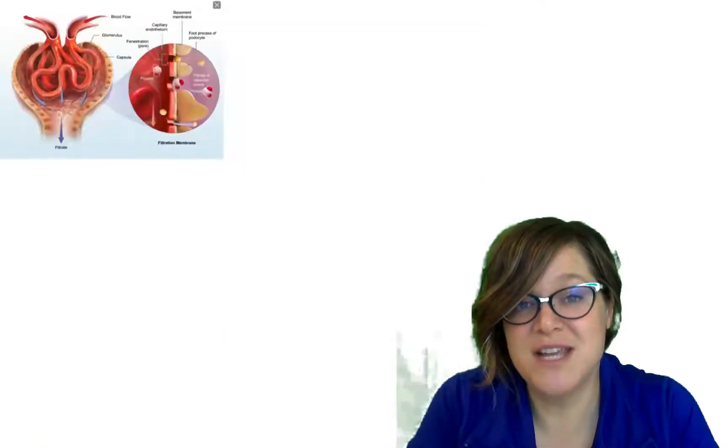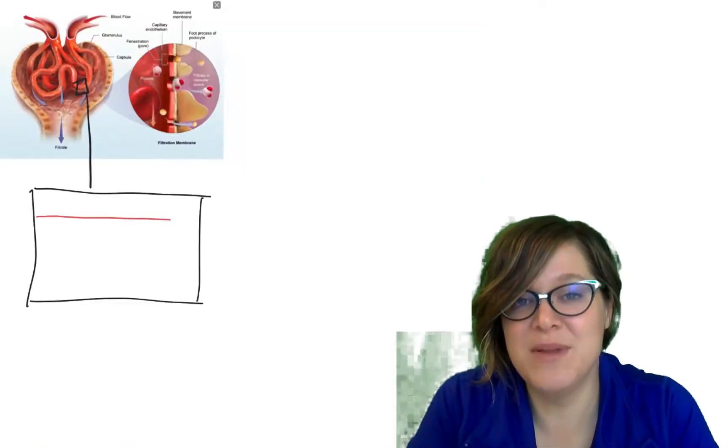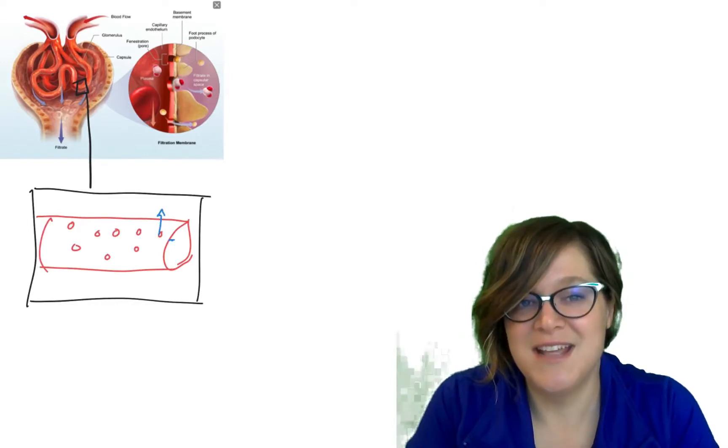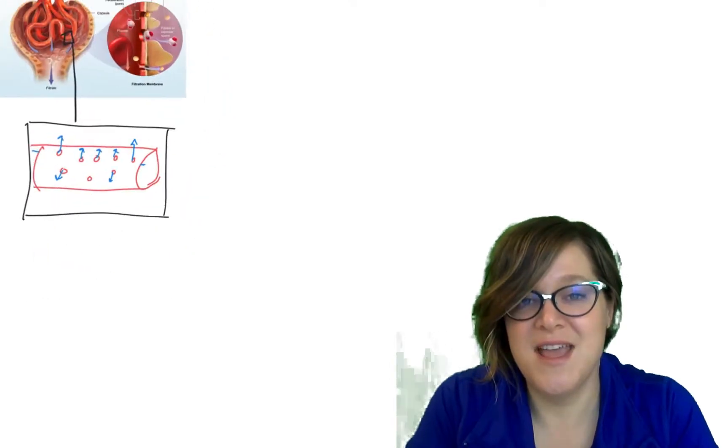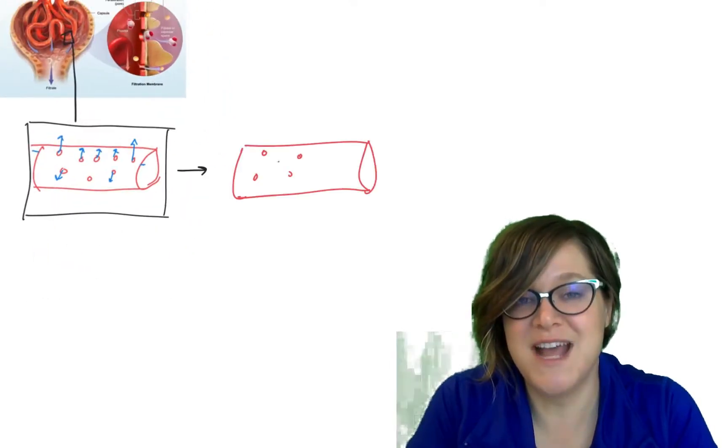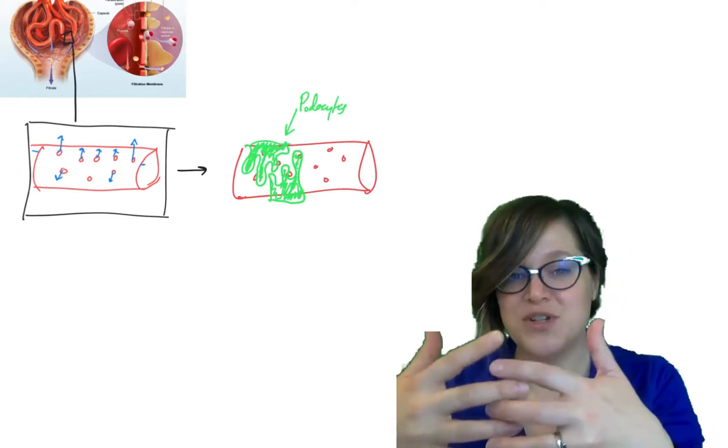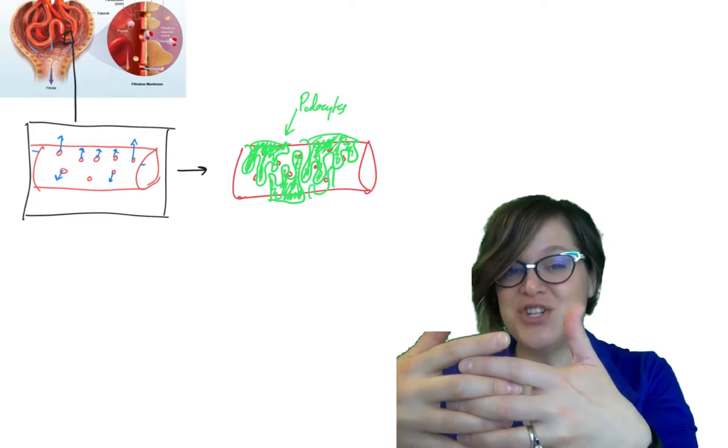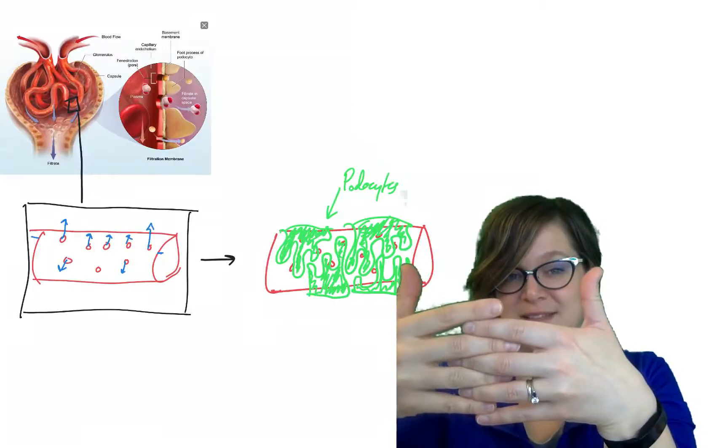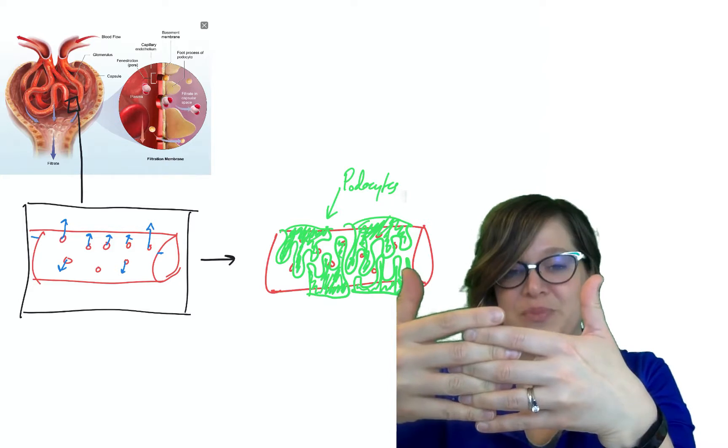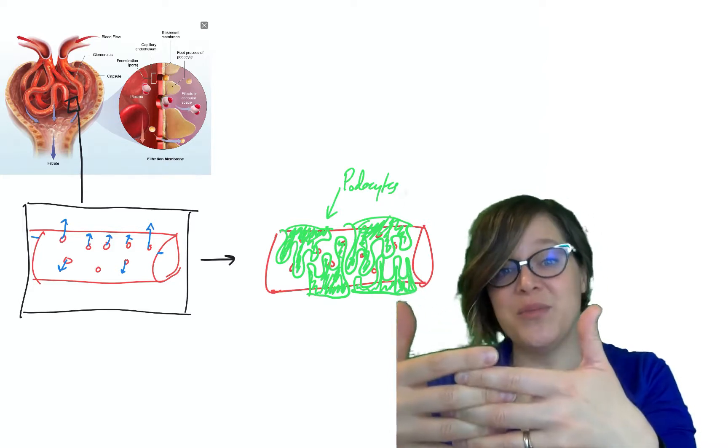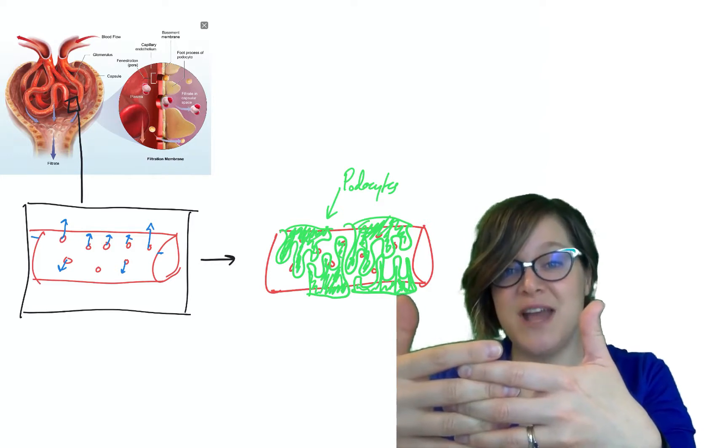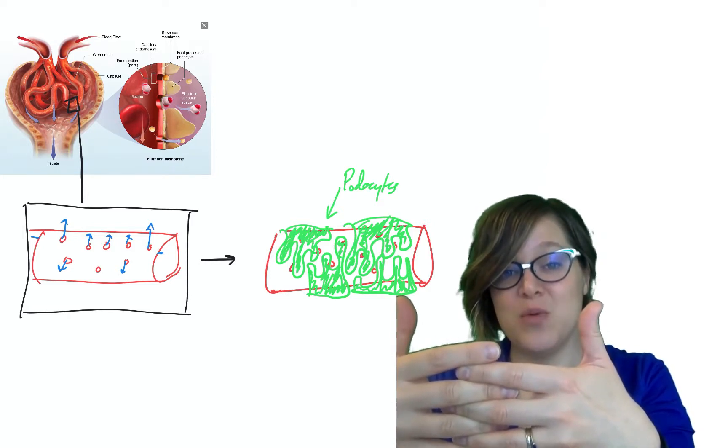If we look closely at that glomerulus, that capillary has some specializations. It's got little holes in it, which are called fenestrations, and surrounding those fenestrations, it has something called podocytes. Podocytes are cells with finger-like projections, and they're talked about as interdigitating, which means that they go like this. They kind of knit together. And those podocytes cover up some of those holes. What this does is it makes less fluid exit that capillary than ordinarily would.